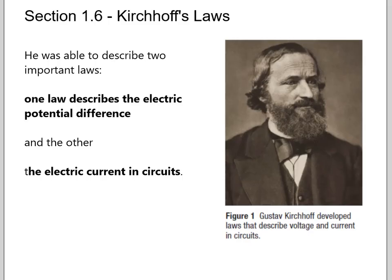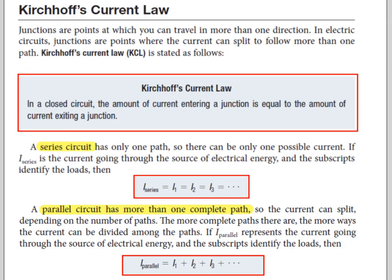So our two laws. Kirchhoff came up with two laws or discovered two laws. One law describes the electric potential difference, that's the voltage law. The other is the electric current in circuits, the current law. Kirchhoff's current law: in a closed circuit the amount of current entering a junction is equal to the amount of current exiting a junction. If you put two amps into that junction you would expect two amps to come out of that junction.